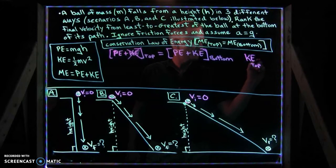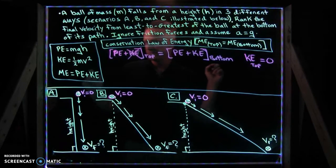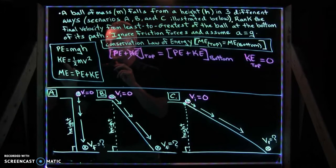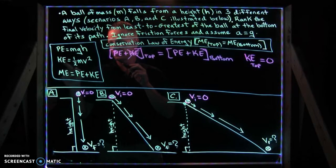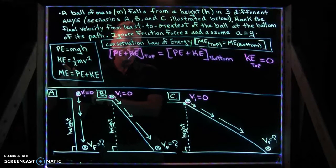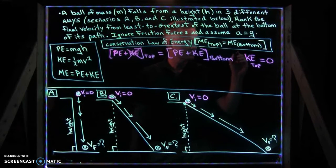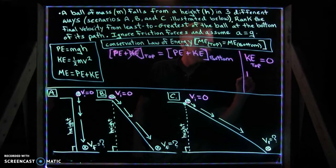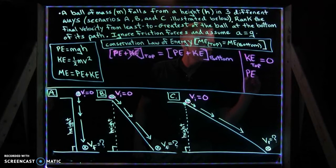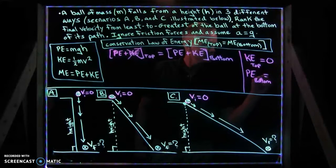Kinetic energy at the top of the path is zero because if it had zero velocity, you can plug in zero into this kinetic energy equation, zero times anything is zero. So at zero velocity, you have zero kinetic energy at the top of its path.